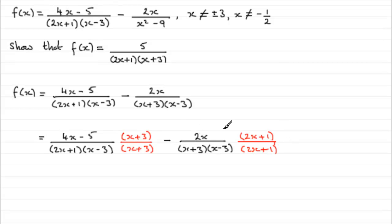So you can see that the lowest common multiple for this is going to be simply 2x plus 1, x minus 3 and x plus 3. So there's our common denominator.